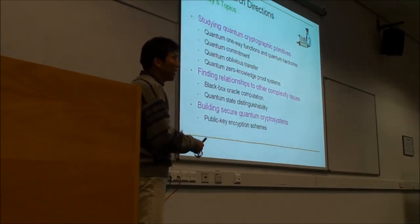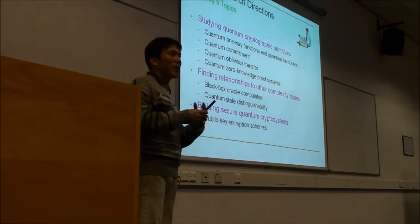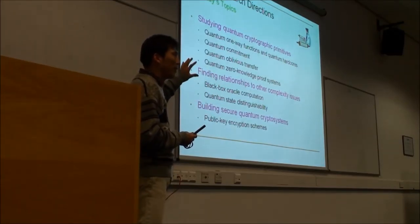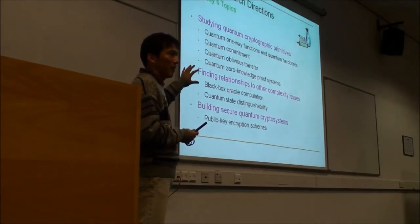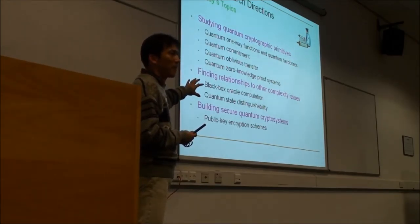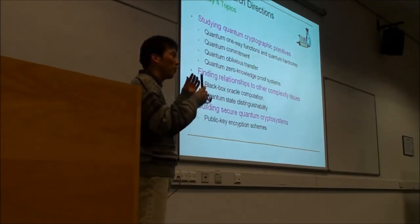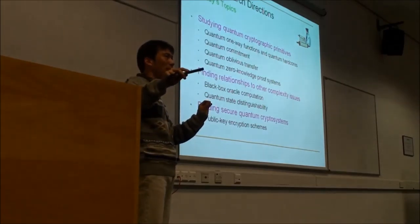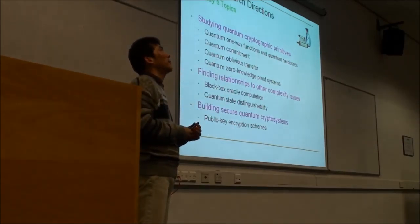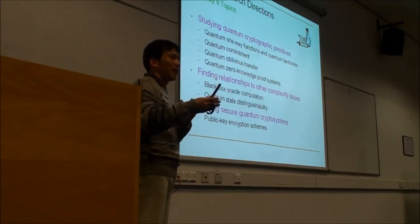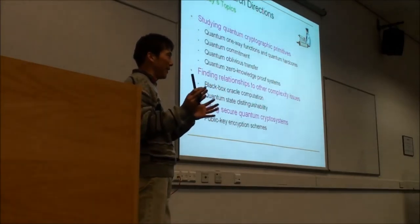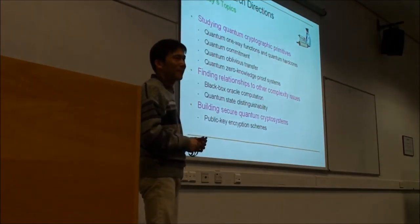One thing to note: this is actually the very first quantum public key encryption scheme. But it's not really efficient, because for one single bit to be sent, you have to produce logarithmically many quantum bits. It's not really efficient in a practical sense. Also, there are many textbooks regarding quantum computation and quantum information theory, and more books are coming. Thank you very much for listening.